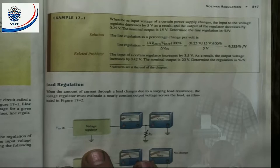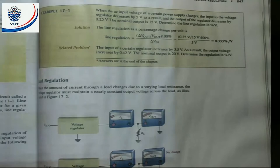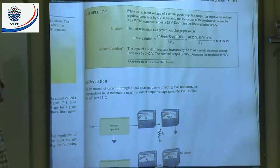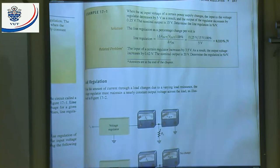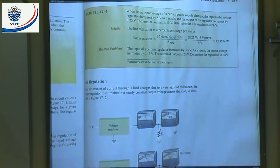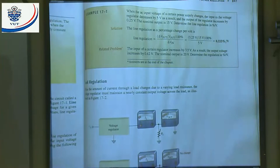Example 17.1: When the AC input voltage of a certain power supply changes, the input to the voltage regulator decreases by 5 volts. As a result, the output of the regulator decreases by 0.25 volts. The normal output is 15 volts. Determine the line regulation in percentage per volt. Line regulation is delta V_out divided by V_out, divided by delta V_in. That gives 0.25 divided by 15, divided by 5, which equals 0.333% per volt.